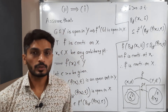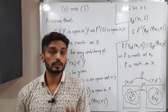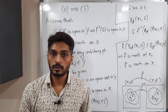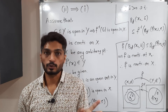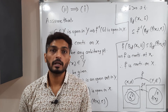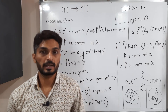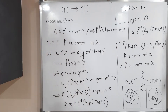Since x₀ is any arbitrary point, f is continuous on X. In this way we proved the first part. We proved 1 implies 2, and now we have proved 2 implies 1. So both statements 1 and 2 are equivalent. You can make a screenshot, then we will go to the next part of this theorem.